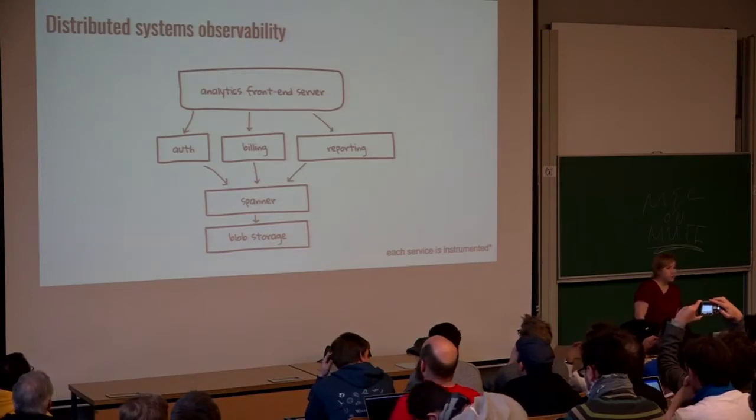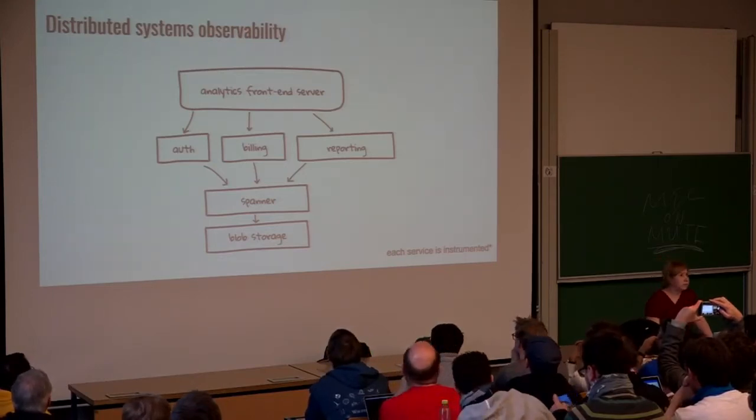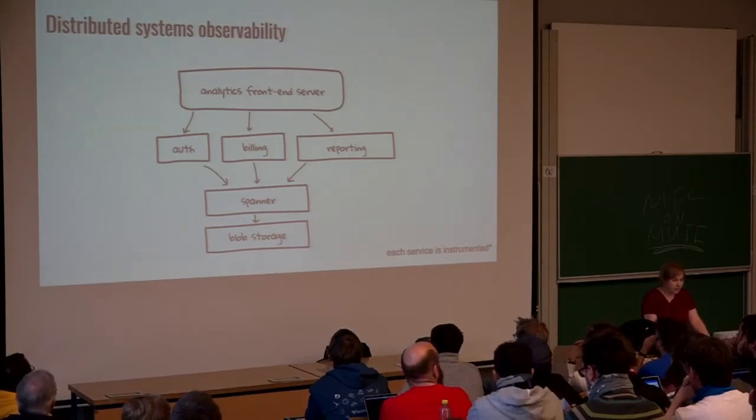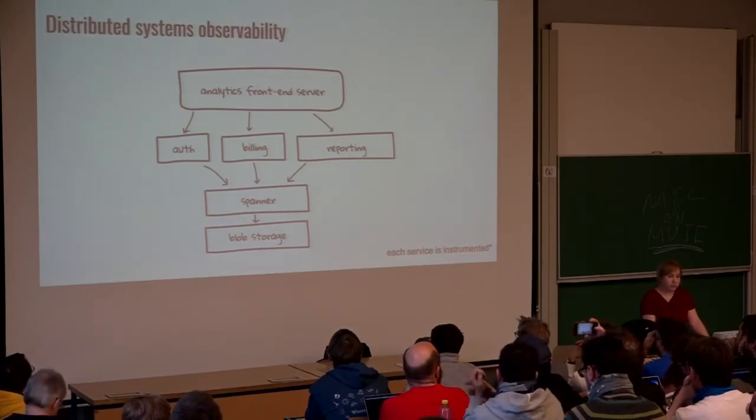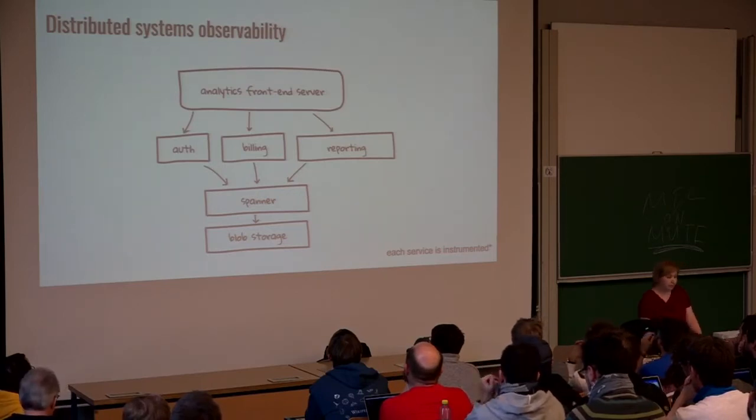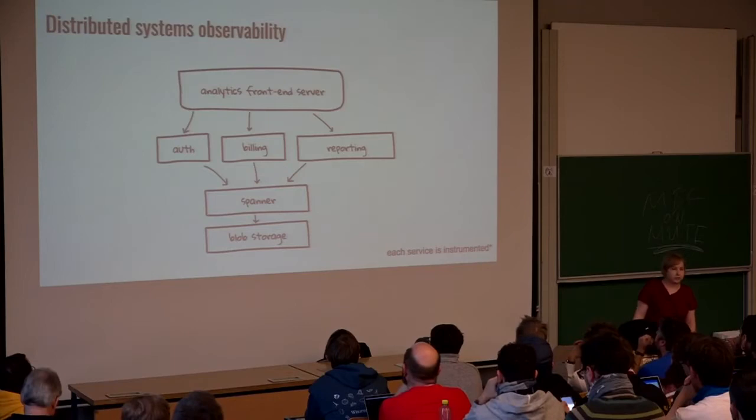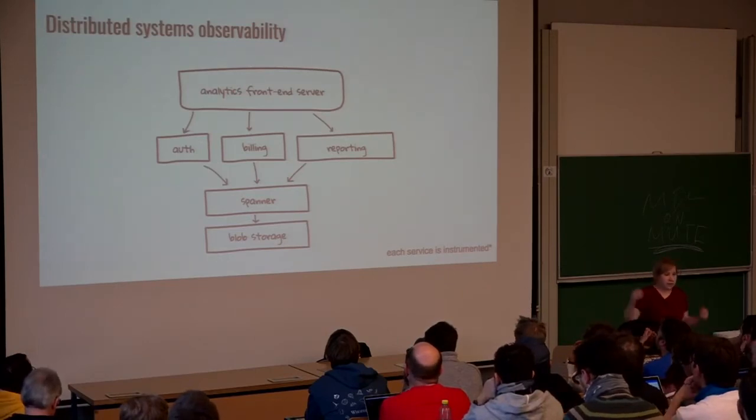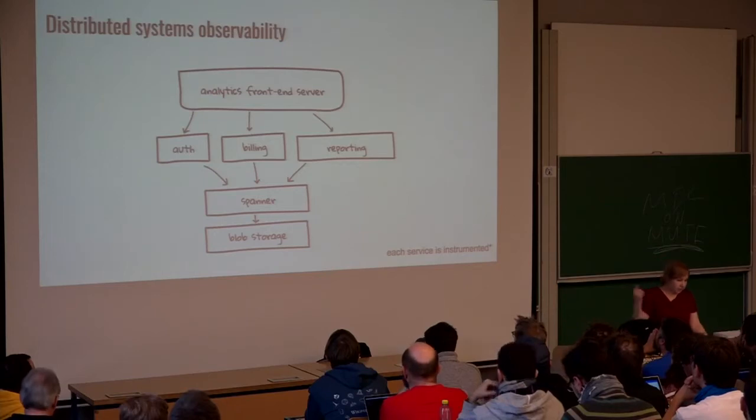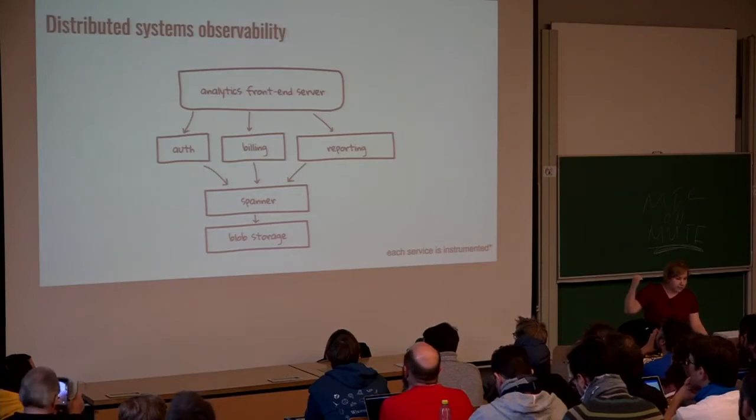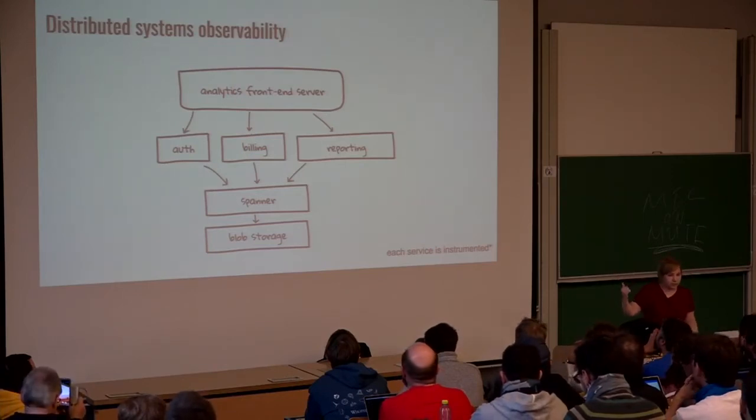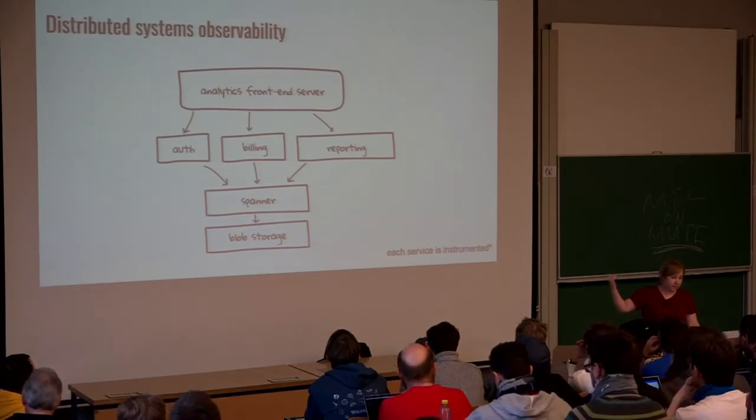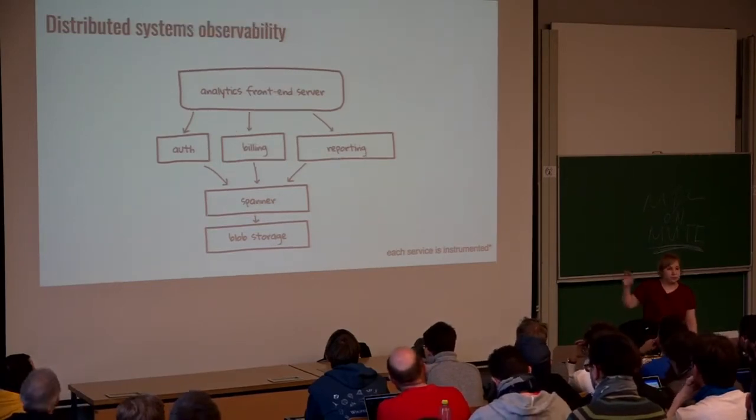Before digging more into the distributed systems observability, I want to briefly explain why it is different than observing monolithic systems. This is a typical architectural diagram for pretty much every product at Google. We usually have this user-facing business logic heavy front-end server that depends on other various services. Authentication, billing, reporting are some of the examples here. In this example, all of these relatively low-level services depend on Spanner, our database, and eventually hitting the block storage service for persistence.